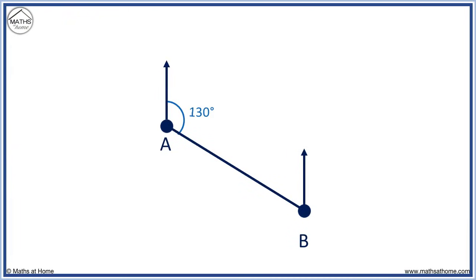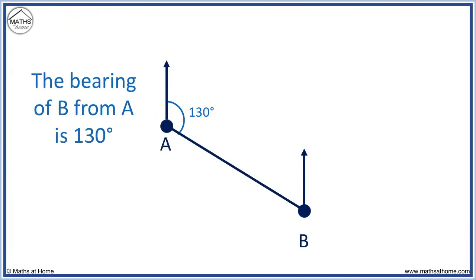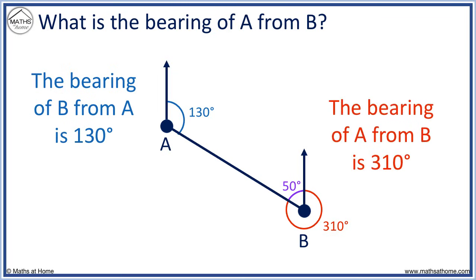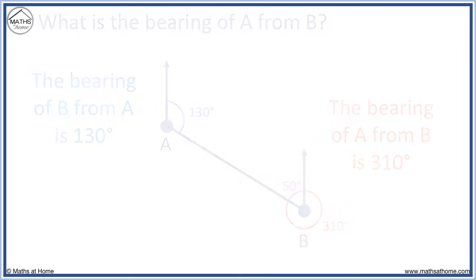Here is another example. The bearing of B from A is simply 130 degrees. What is the bearing of A from B? We know that 130 degrees and this angle make a C shape, so they add to 180 degrees — this angle is 50 degrees. The bearing is this clockwise angle; we subtract 50 degrees from 360 degrees to get 310 degrees. The bearing of A from B is 310 degrees.